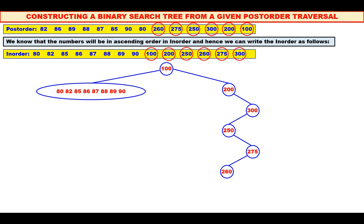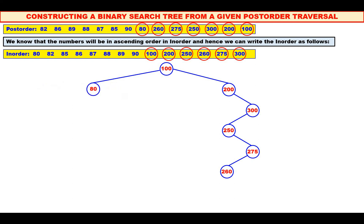The right sub-tree is completely over. Let us come to the left sub-tree. Now, among 80, 82, 85, 86, 87, 88, 89, 90, which is the root? See the post-order — 80 is the root. We will make 80 as the root and mark 80 in the inorder also. All the elements lie to the right of 80, so take all of them into the right sub-tree.